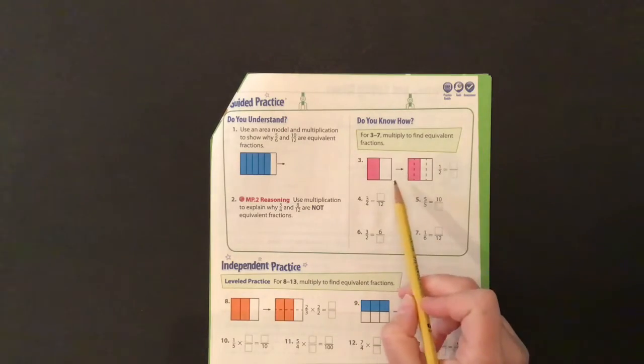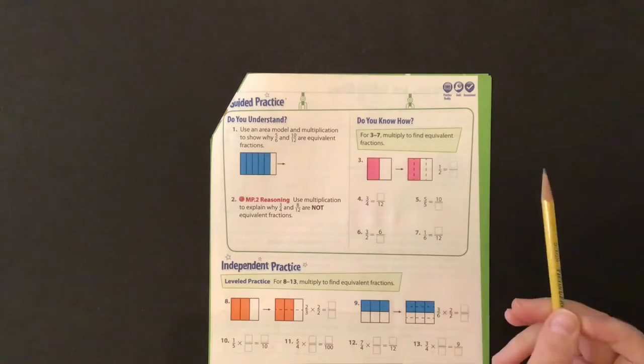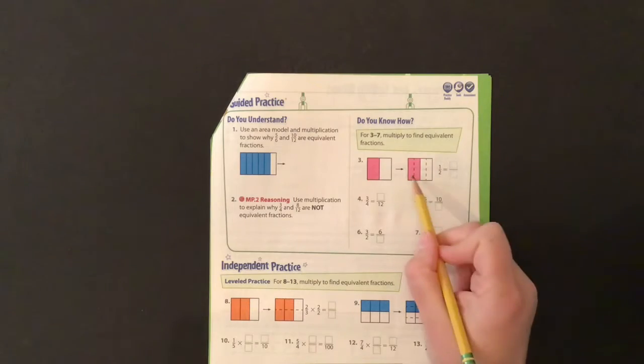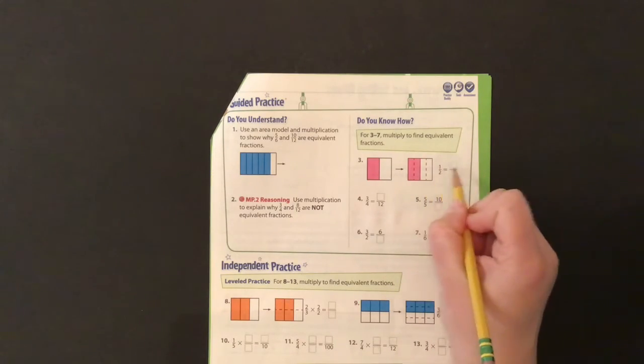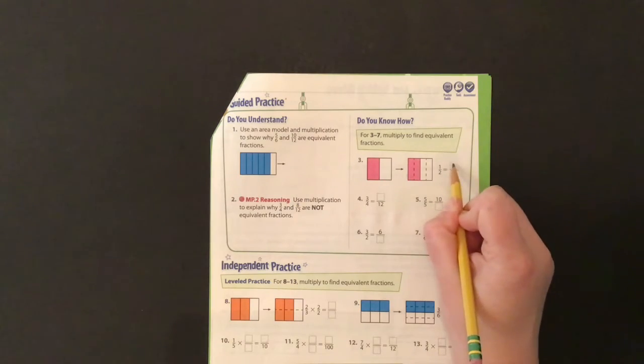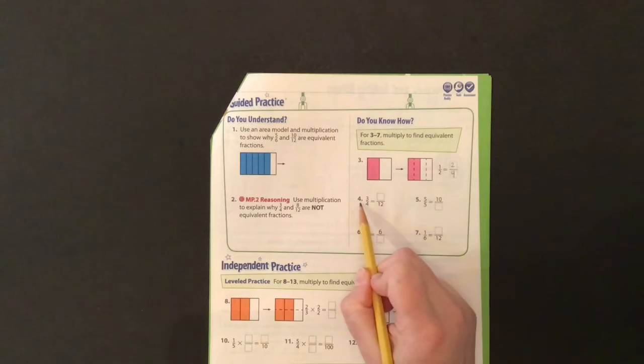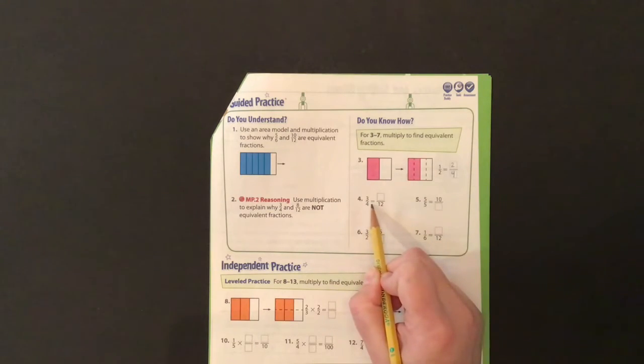So on the top part of the page, it says multiply to find equivalent fractions. And I can go ahead and see this is 1 half. They've drawn lines to find an equivalent fraction. So 1 half equals 2 4ths. Now over here on number 4, they have multiplied and found the equivalent fraction, the denominator.